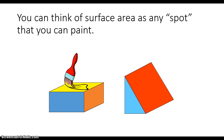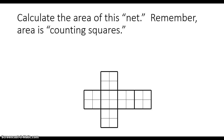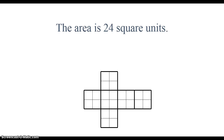Let's start with surface area. You can think of surface area as any spot that you can paint. Another example might be anything you would wrap — so if you're wrapping a gift with wrapping paper, the surface area is what you would cover with the wrapping paper. If I wanted to calculate the area of a net, remember, area is counting squares. I would just count how many squares are in this net, and the area is 24 square units.